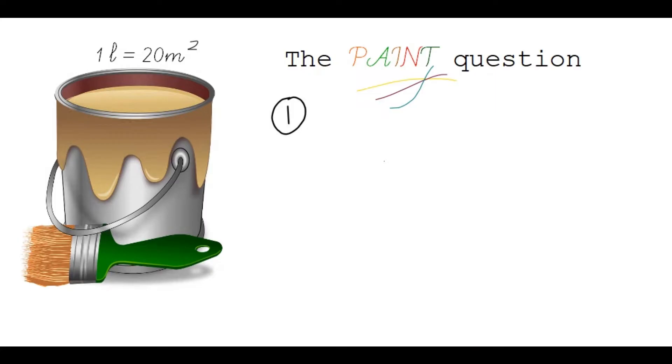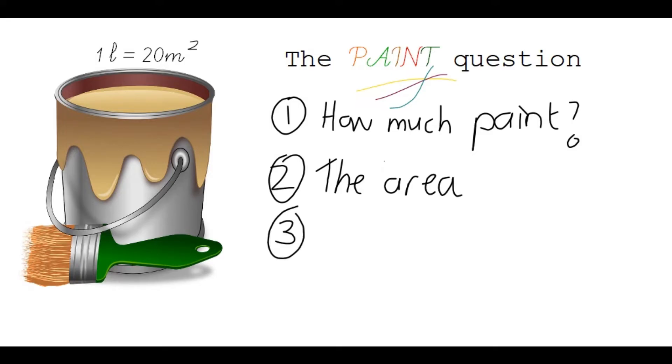The first type of question is how much paint, so how many liters of paint do I need to cover a certain area. The second type of question they can ask you is the area, which area will so many liters of paint cover. And the third type of question is the cost, what will this whole story cost me.